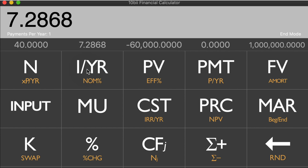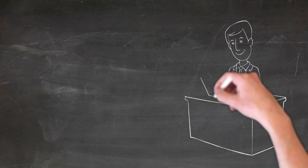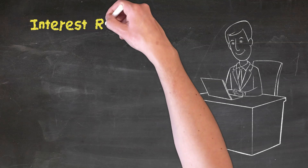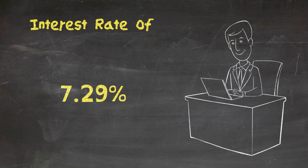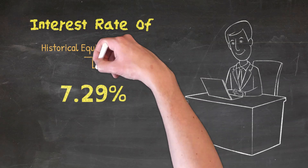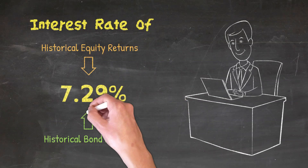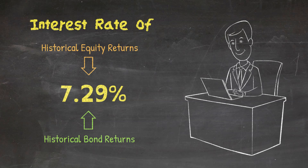7.29. So as a financial professional, you need to look at that and think: 7.29 — is it doable? Well, certainly it's well under historical equity returns, but it's also above historical bond returns. So at 7.29%, we're going to need to go to the client and make sure we understand the risk-reward to get to that million bucks.